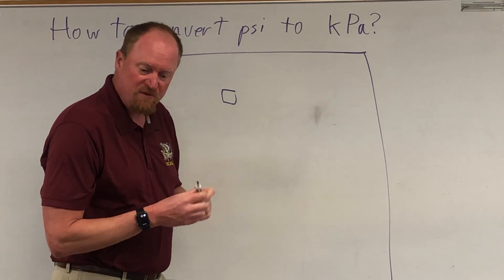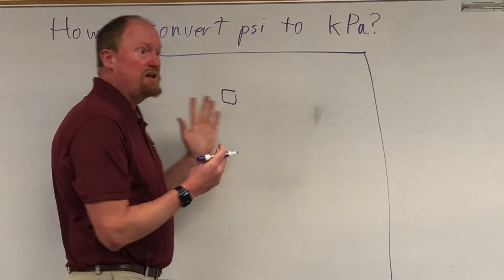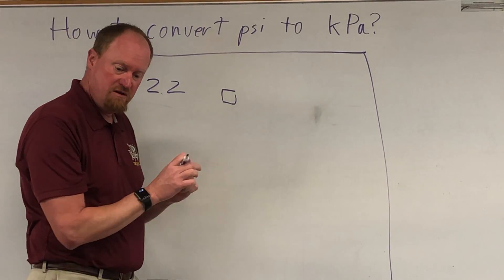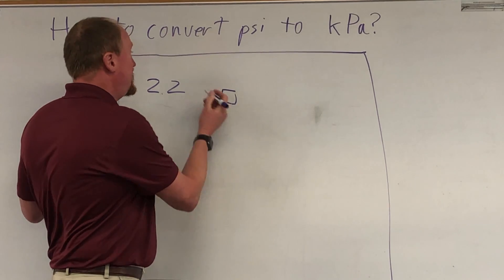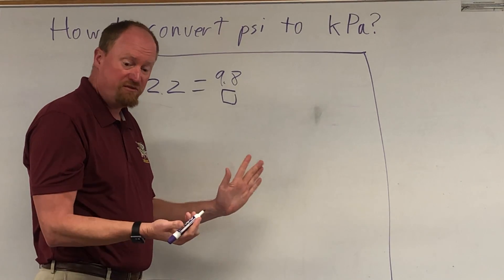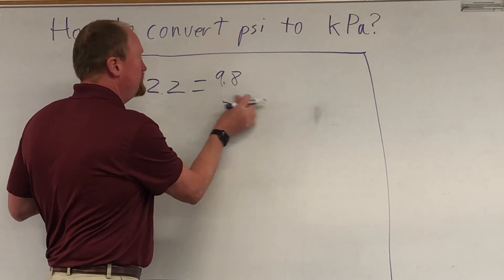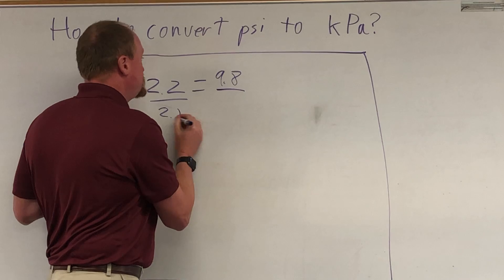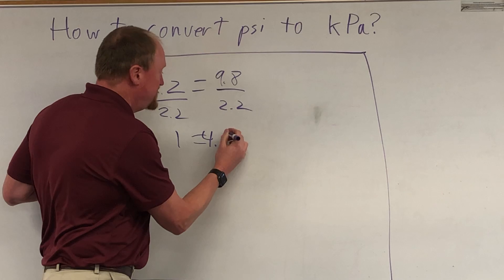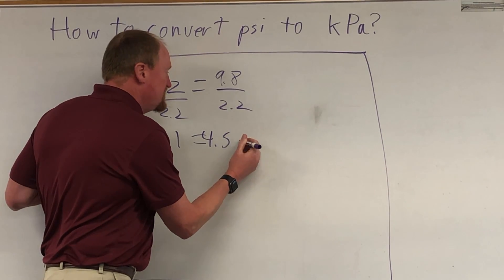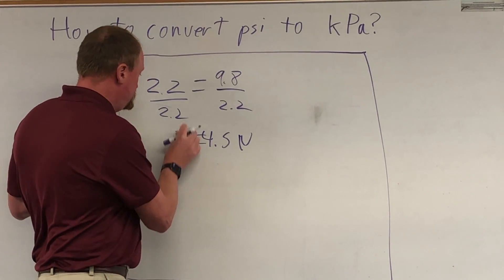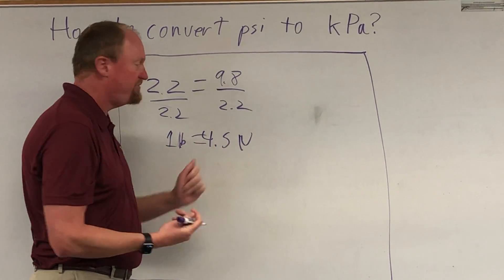So let's get into it, shall we? So a kilogram is roughly 2.2 pounds. On earth, a kilogram is 9.8 newtons. So to convert this, we're going to simply divide both sides by 2.2, and basically one pound is equal to 4.5 newtons. So one pound is equal to 4.5 newtons.